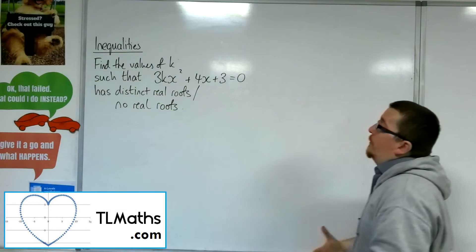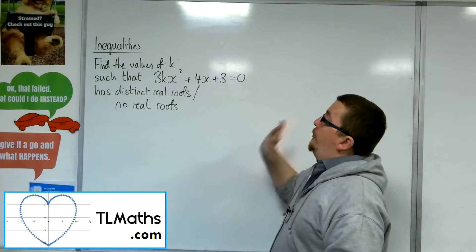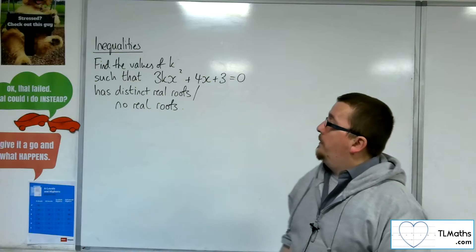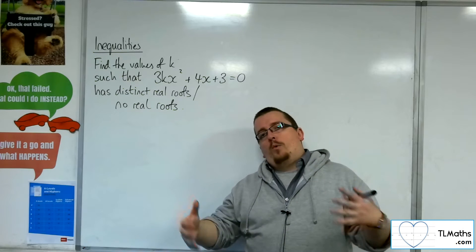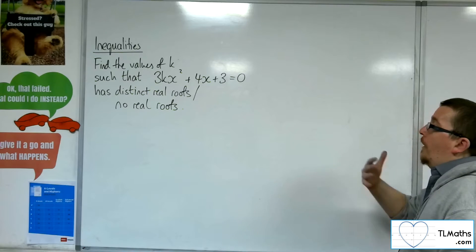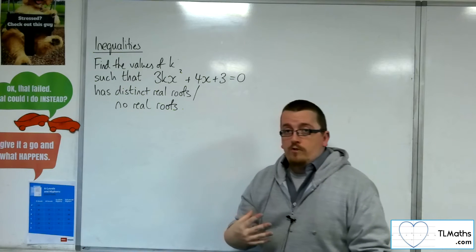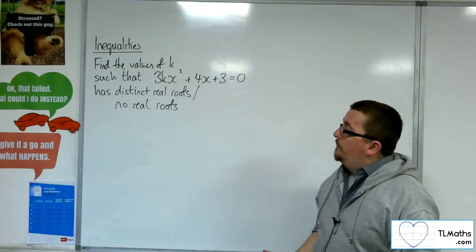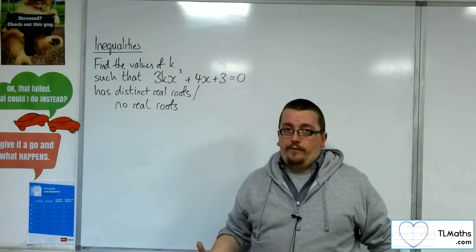Okay, so let's say we've got this quadratic equation, 3kx squared plus 4x plus 3 equals 0. And I want to determine the values of k that would make this have either distinct real roots, so two distinct real roots, or no real roots.